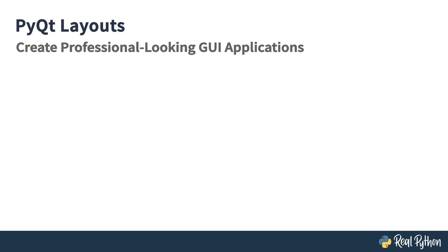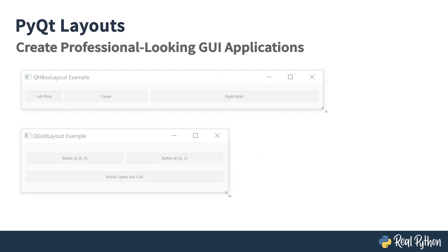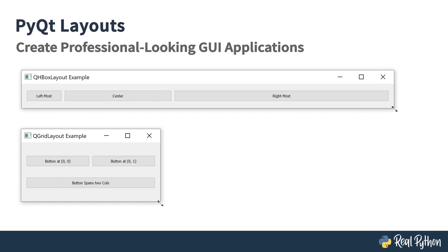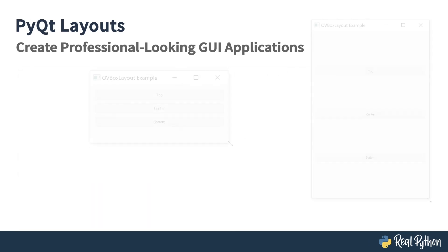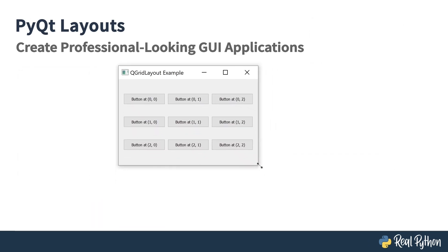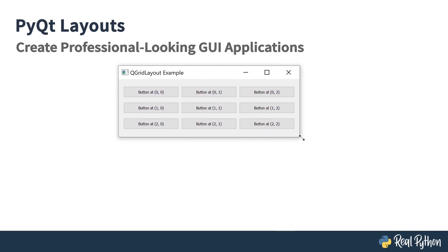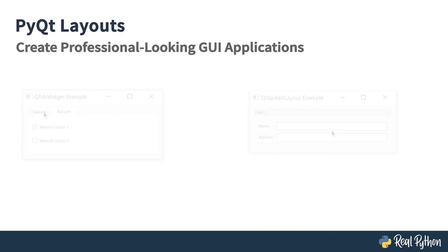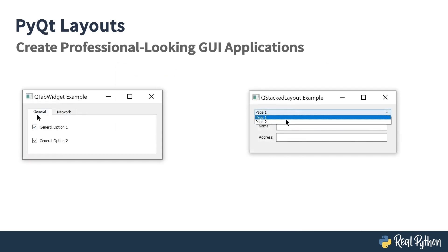Hello there! In this course, we are going to create flexible GUIs in PyQt 5. Here's what we are going to make: we are going to create some GUIs that scale in the horizontal axis, some that scale on the vertical axis, some that scale in both axes, and we are also going to make some GUIs that have tabs and entire different pages.